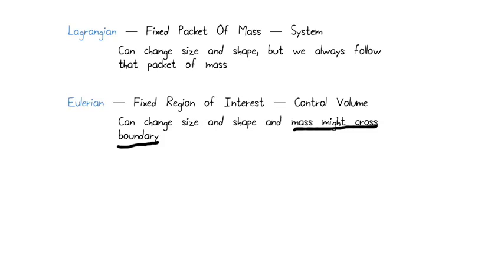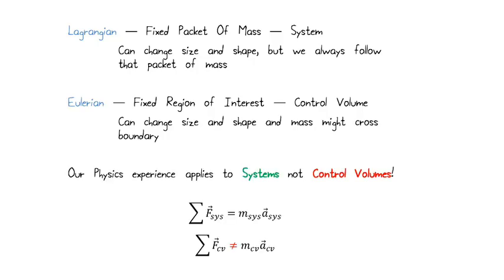The control volume approach is really what's natural for looking at fluid mechanics. If I have a pump, I don't want to follow every packet of fluid through that pump — I want to look at the pump and see what comes in and what goes out. That's a control volume. Unfortunately, all of our experience with physics really applies to systems and not control volumes. Newton's second law — the sum of forces equals Ma — only applies to a system. It doesn't apply to a control volume. So it's natural to look at control volumes, but our physics relates to systems. What do we do?